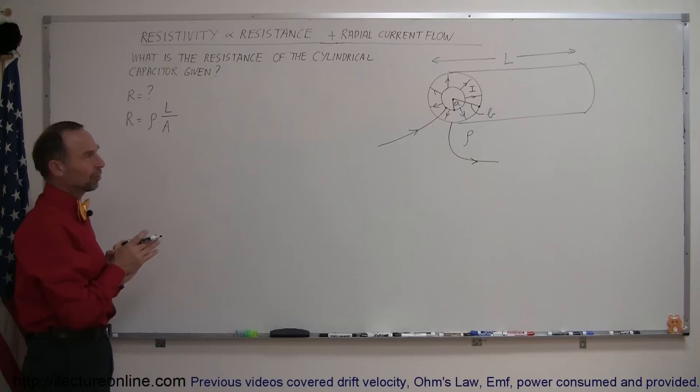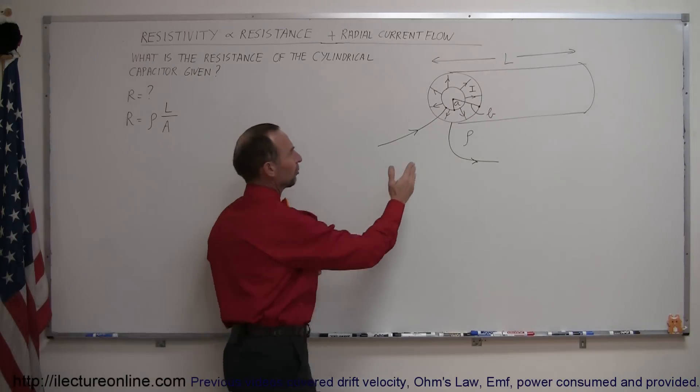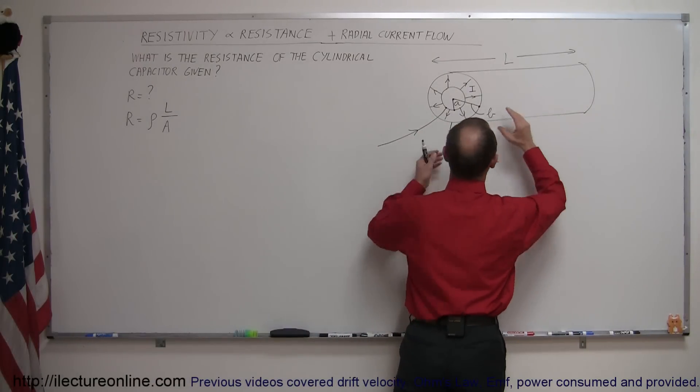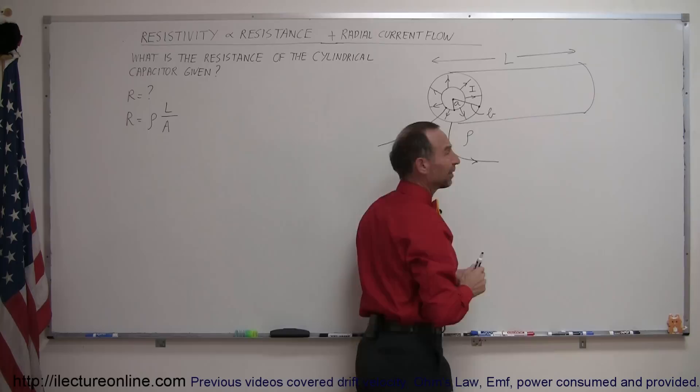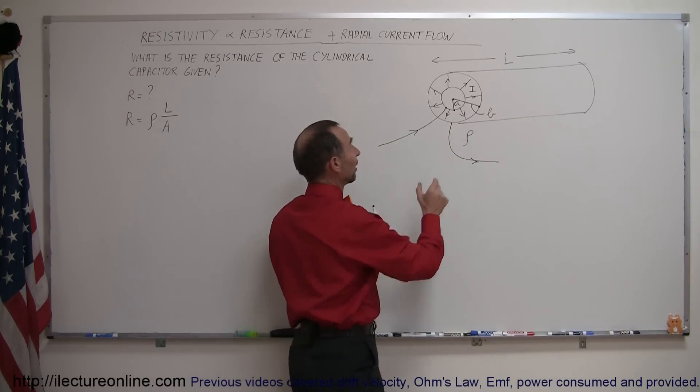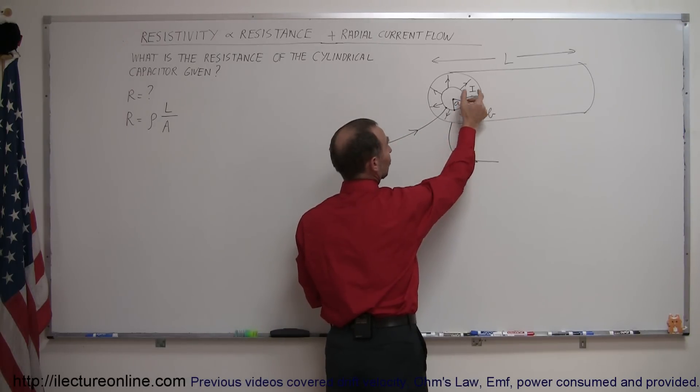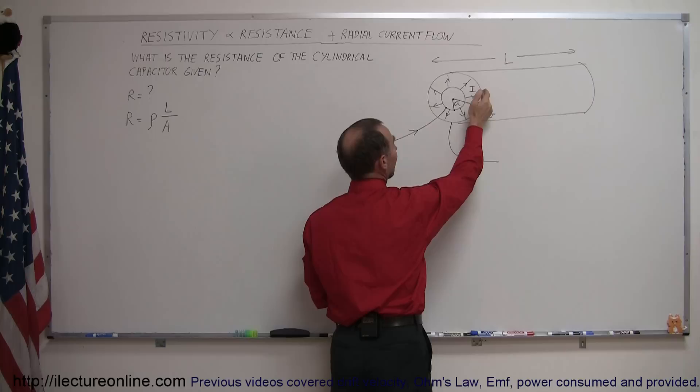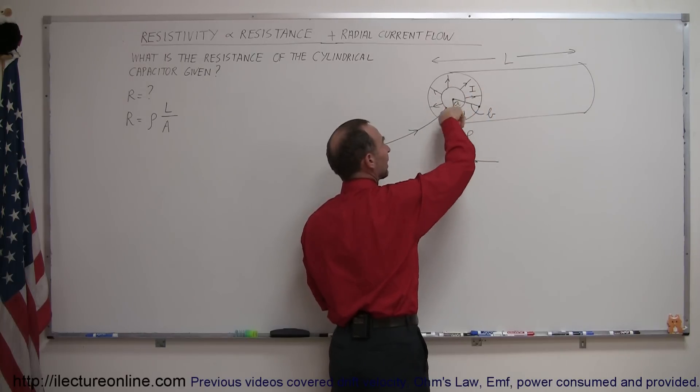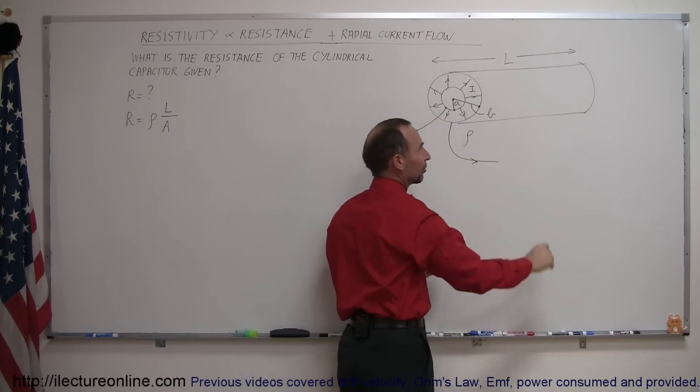But now here we have to be careful. We know that the current doesn't run through the length of this object, it runs from the inside to the outside. So length in this case becomes very different. The length is the distance the current has to travel from the inside to the outside, and then the cross-sectional area would be kind of like the inside cross-sectional area of a cylinder.